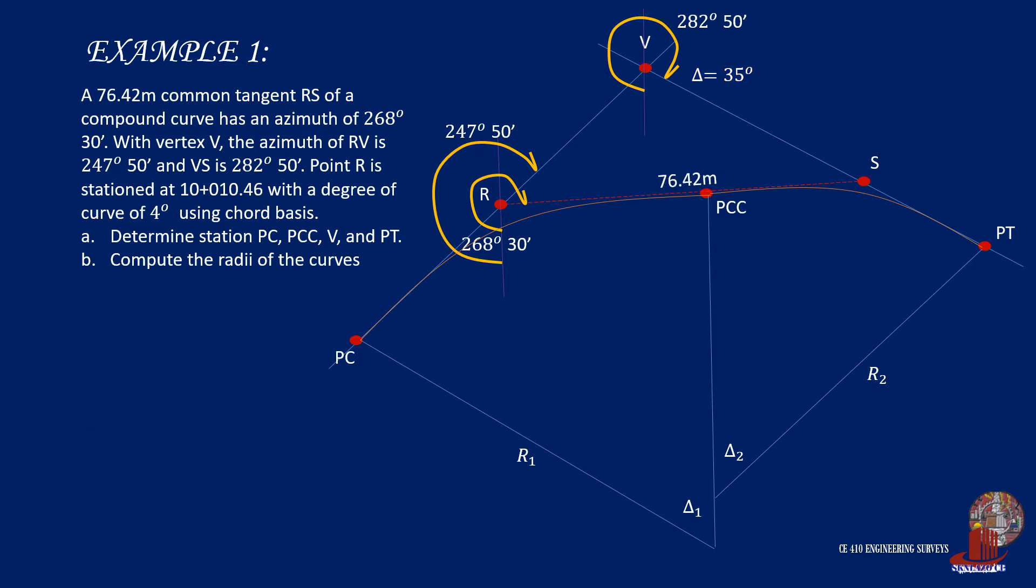The other angles can also be computed. By checking the angles provided in point R, we can compute the difference of the azimuth again, which would actually give the central angle of the first curve. So, that is 268 degrees 30 minutes less 247 degrees 50 minutes to give us delta 1 as 20 degrees 40 minutes.